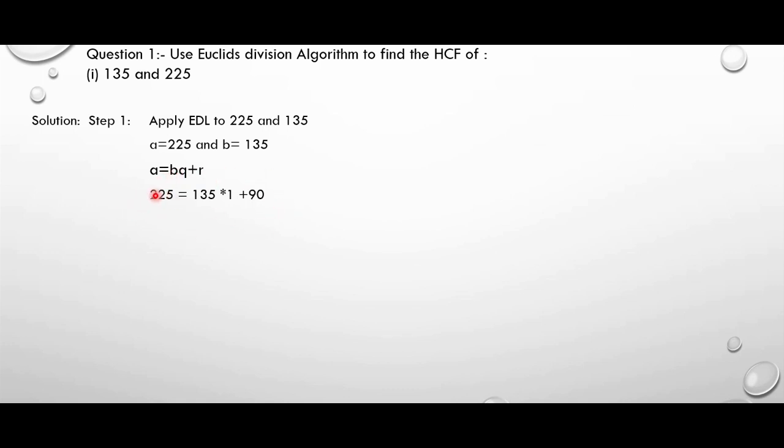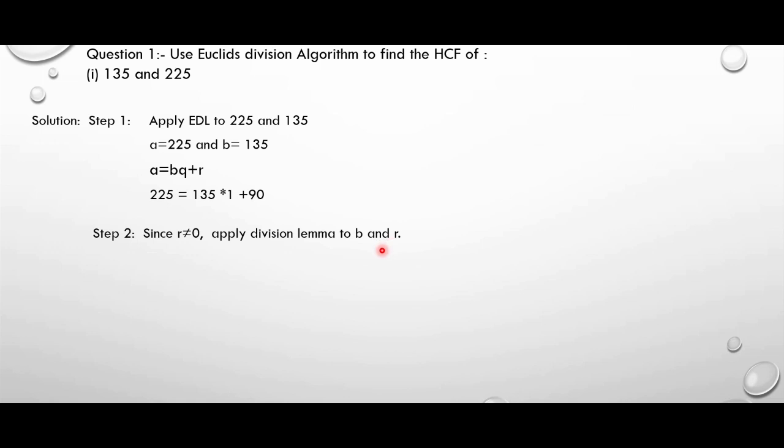Here we have a equal to 225, which is equal to 135 into q plus r. We can write it as 225 equal to 135 into 1 plus 90. If you don't know how to solve this, divide 225 by 135 — 225 is the dividend and 135 is the divisor. You will get quotient as 1 and remainder as 90. Now the remainder is not equal to 0, so we need to go to step 2. Since r is not equal to 0, we apply Euclid's division lemma to b and r, that is 135 and 90.